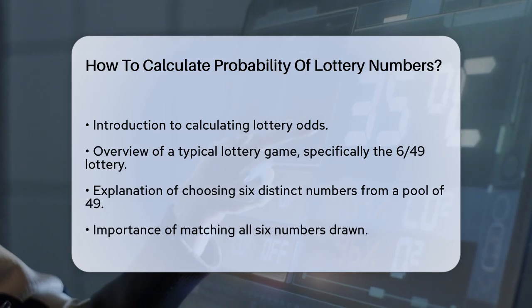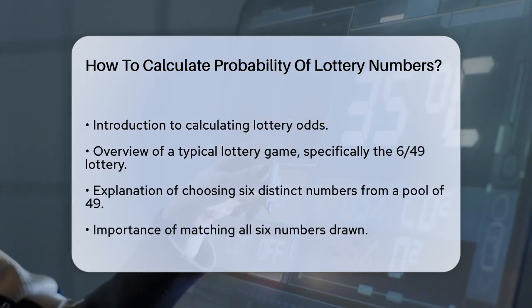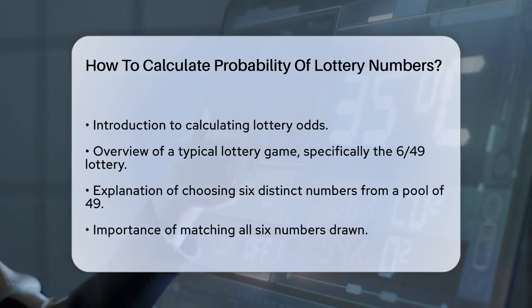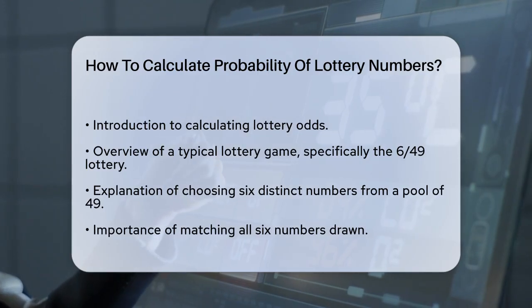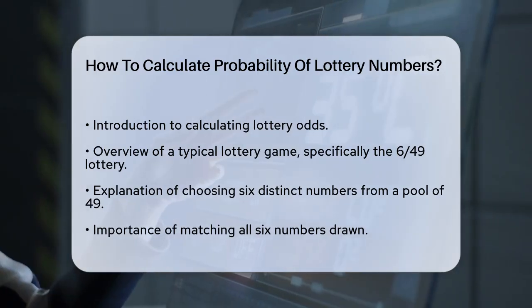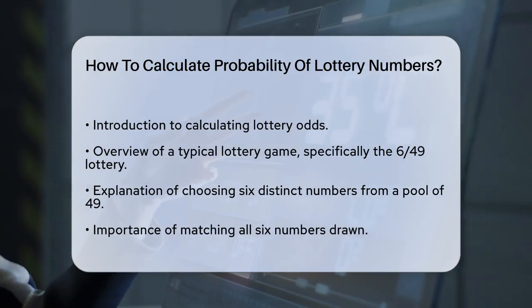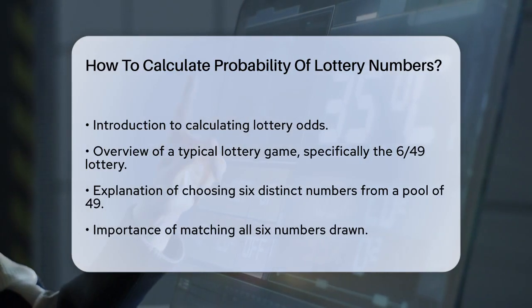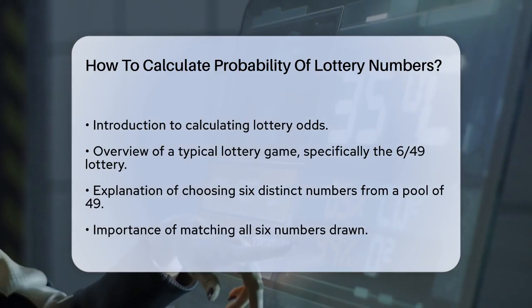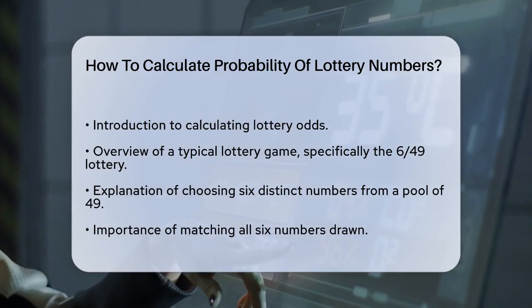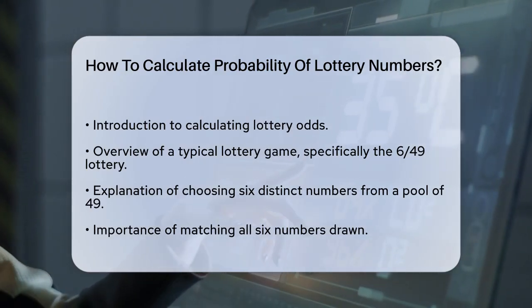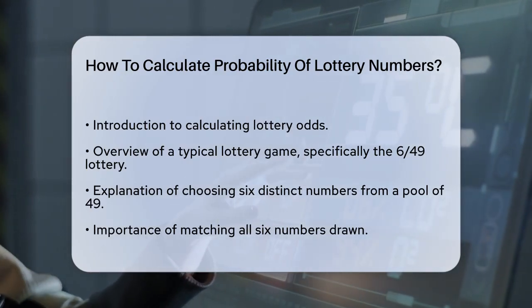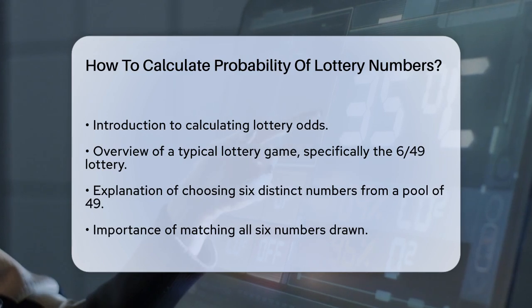First, let's talk about the basics of a typical lottery game, like the 6/49 lottery. In this game, you choose six distinct numbers from a pool of 49 numbers. The goal is to match all six numbers drawn by the lottery, and the order of the numbers doesn't matter.